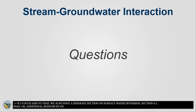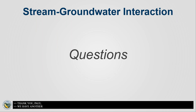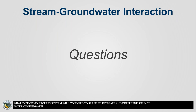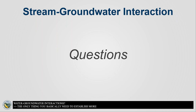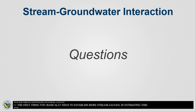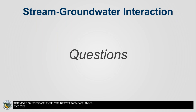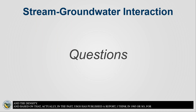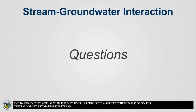Question: what type of monitoring system will you need to set up to estimate and determine surface water-groundwater interactions? Saqib responded: you basically need to establish more stream gauges — the more gauges you have, the better data you have. USGS published a report, around 1985, for the Central Valley estimating stream-groundwater interaction in Central Valley streams from 1961 to 1977 based on stream gauge data. The density of stream gauging is the key factor.